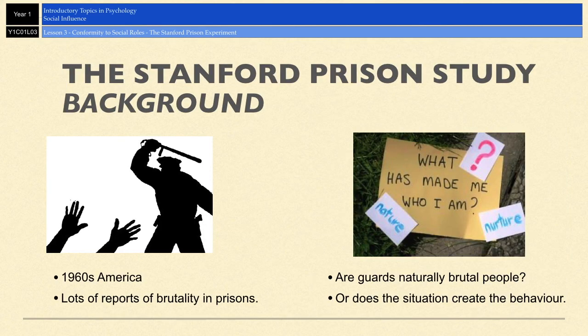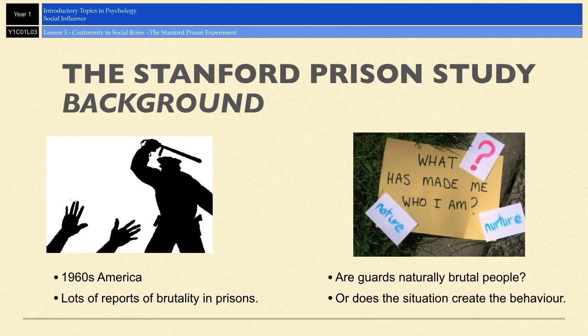A bit of background to the Stanford prison study first. In 1960s America there were lots of reports of prison guard brutality towards prisoners, and to examine why that is, Zimbardo wanted to conduct a study to answer the question of whether guards are naturally brutal people — whether that type of job attracts people who enjoy being violent — or whether it's actually the stressful and dangerous situation of working in a prison that creates brutal behavior.